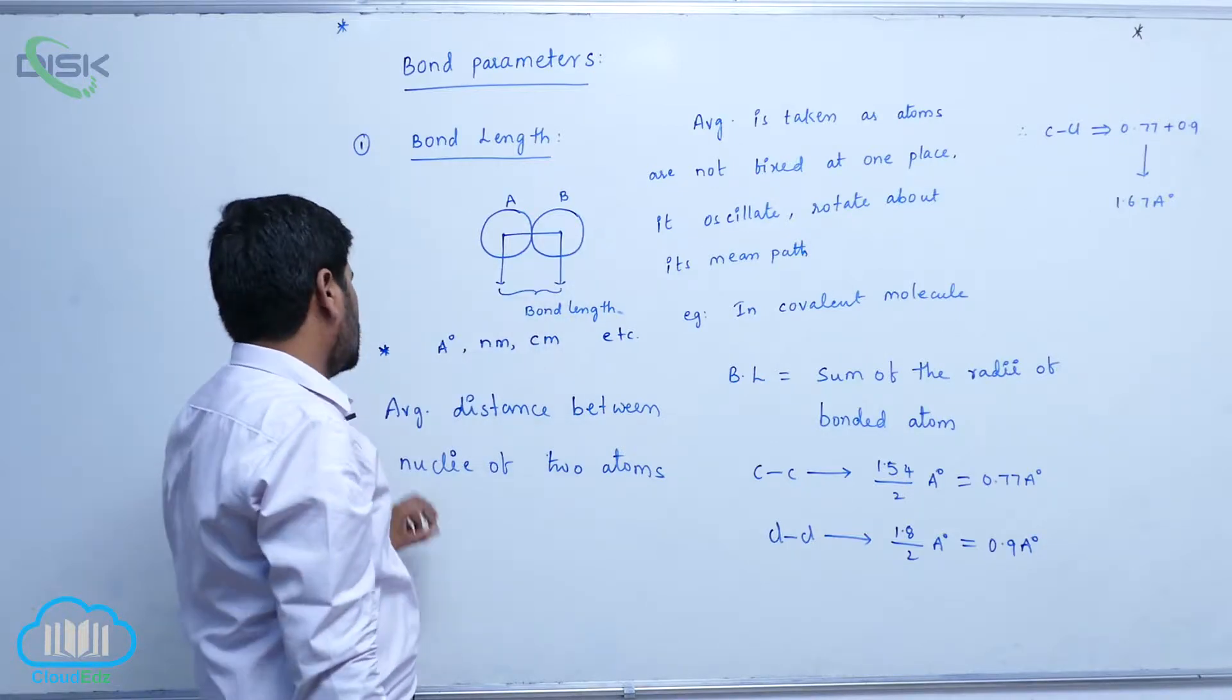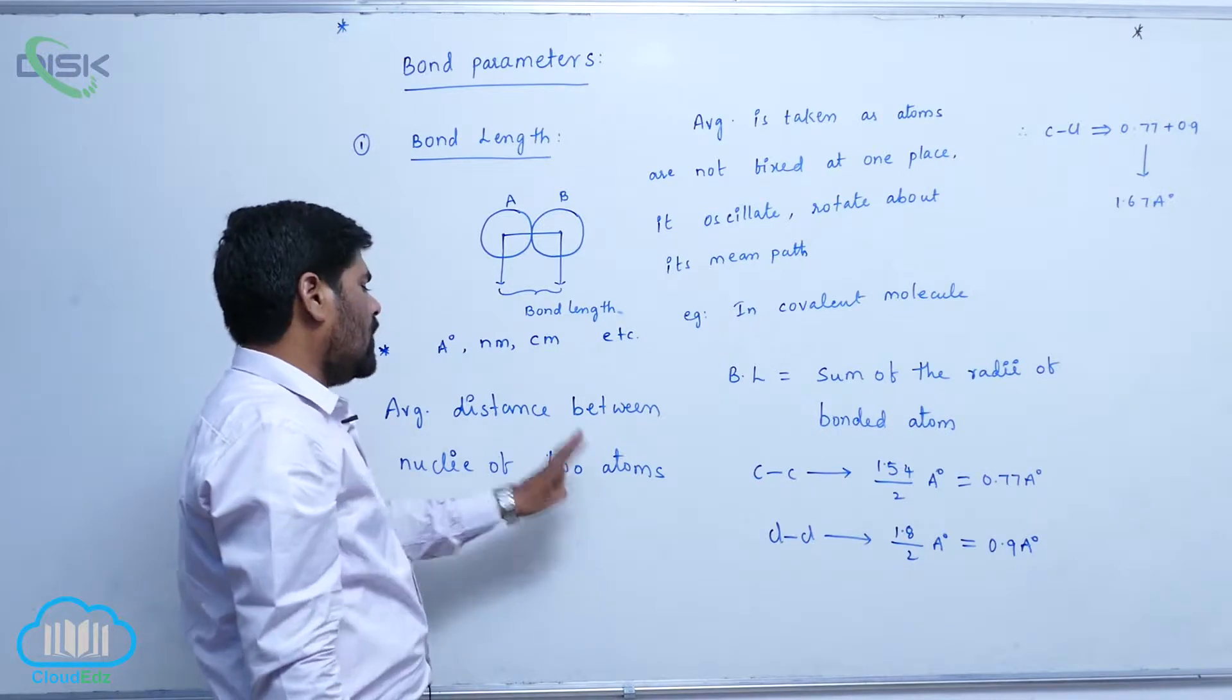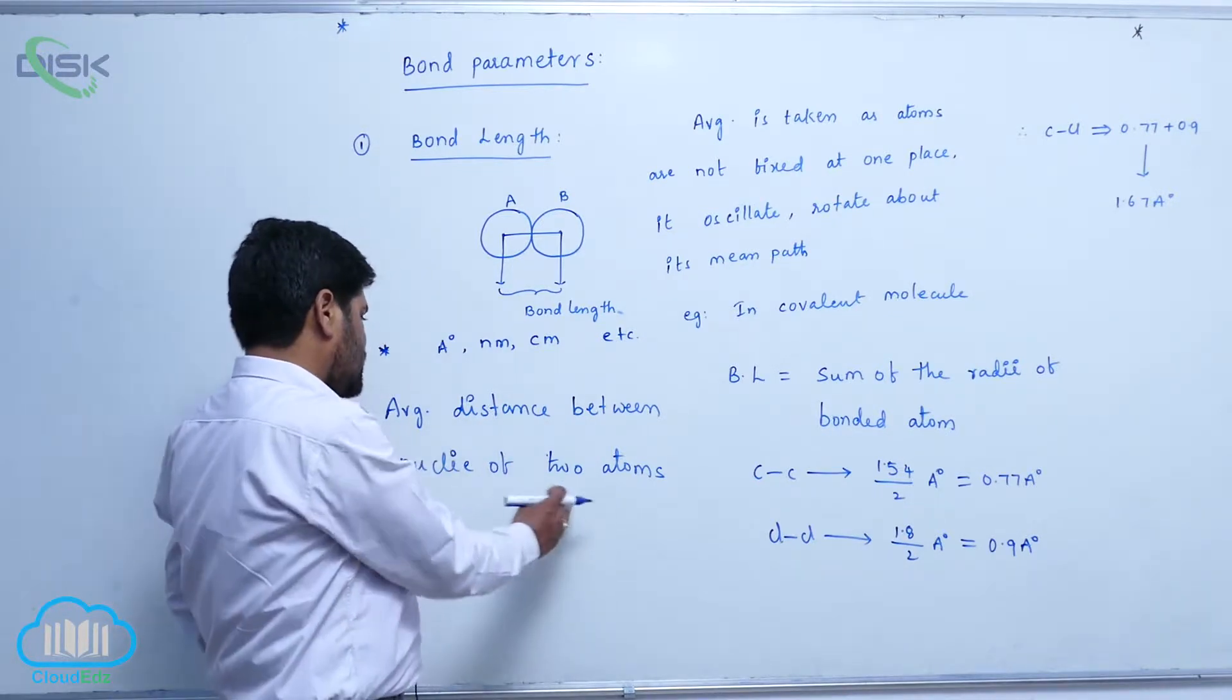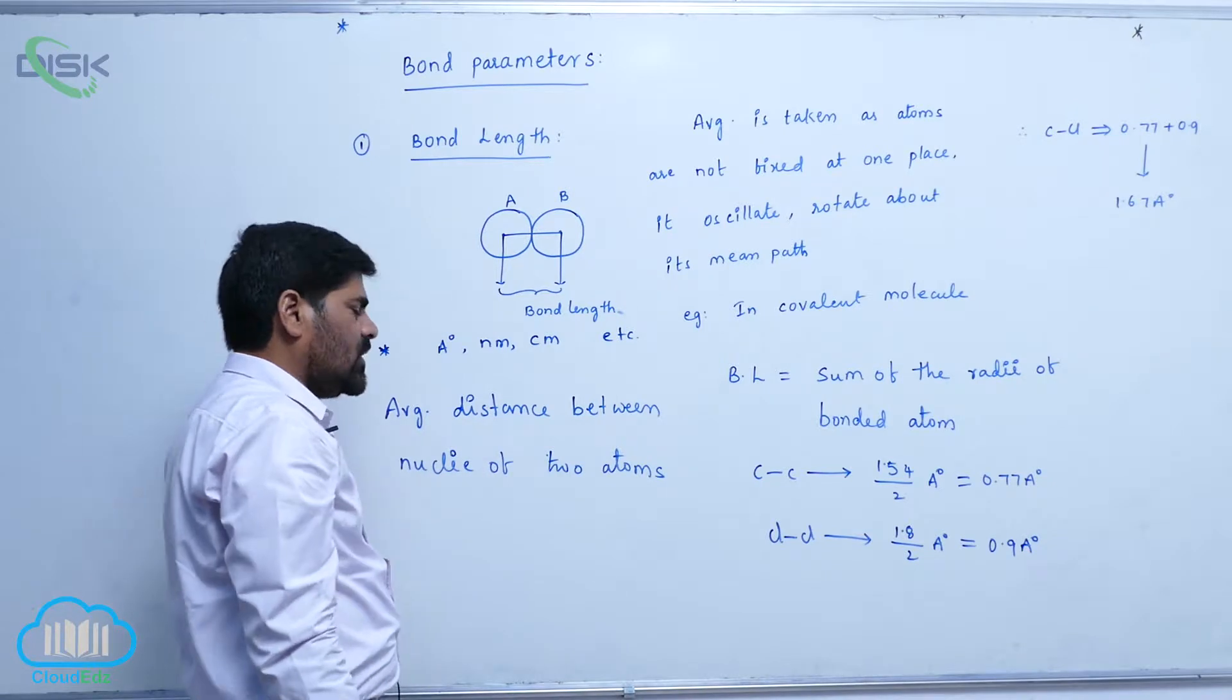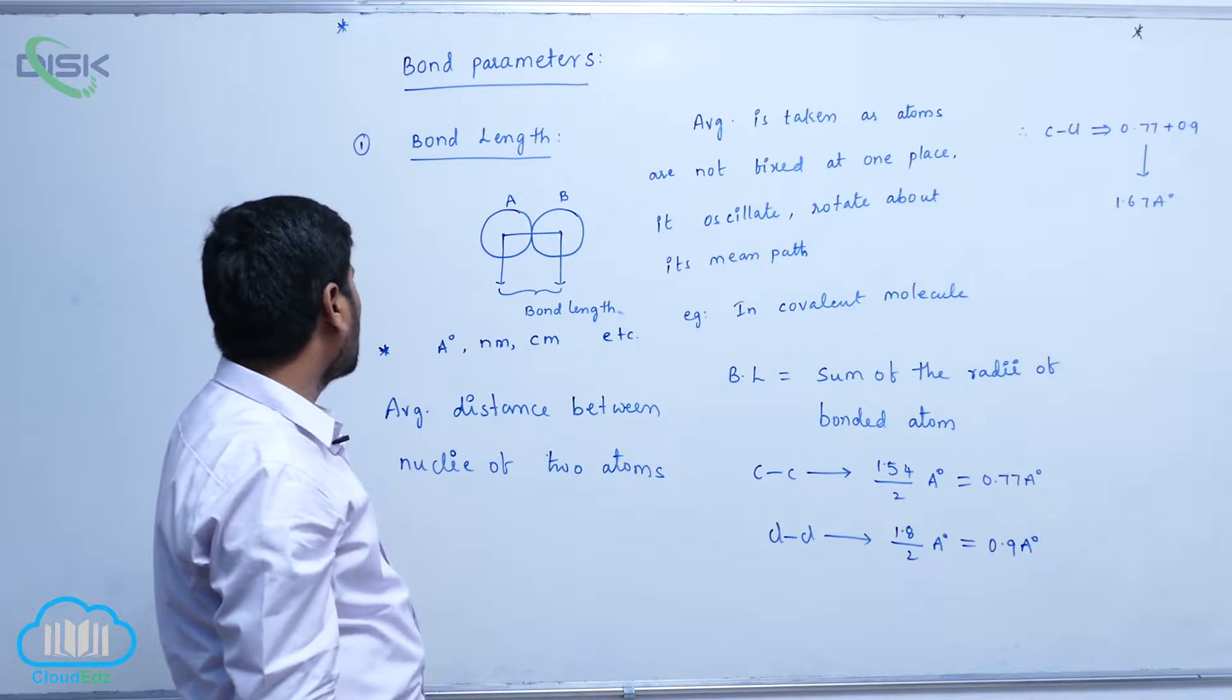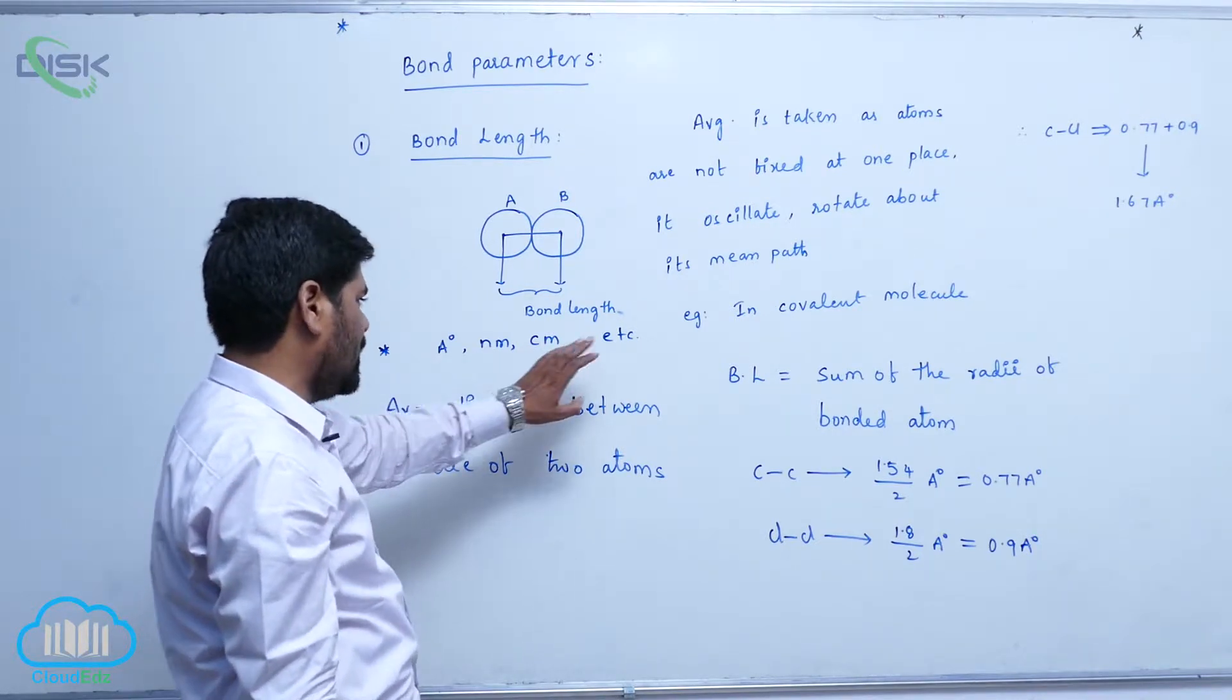The average distance between nuclei of two bonded atoms is known as bond length. It is represented by angstroms, nanometers, centimeters, etc.